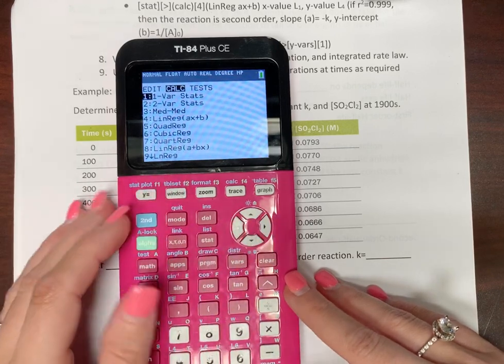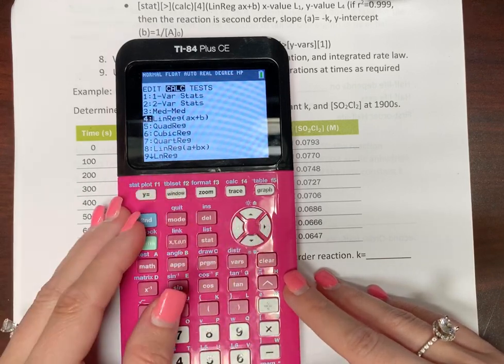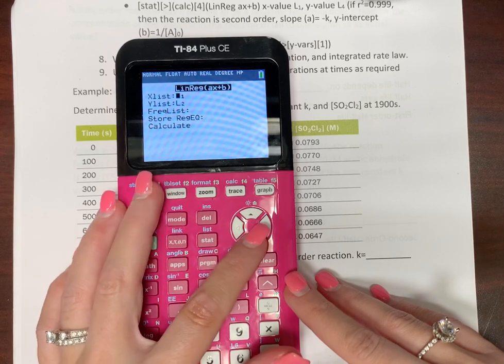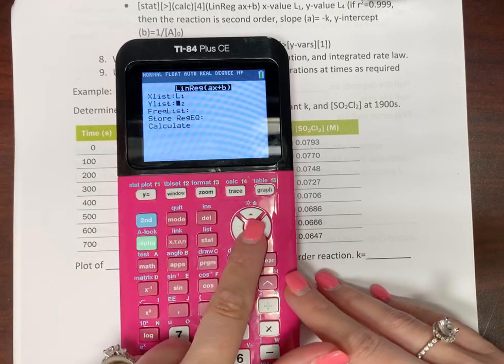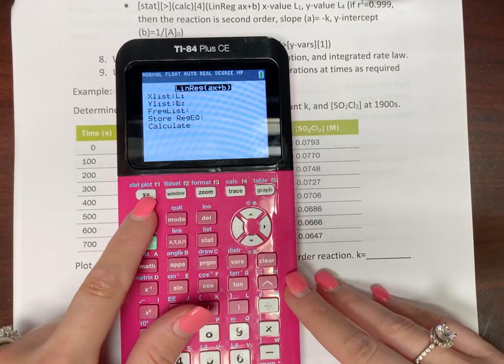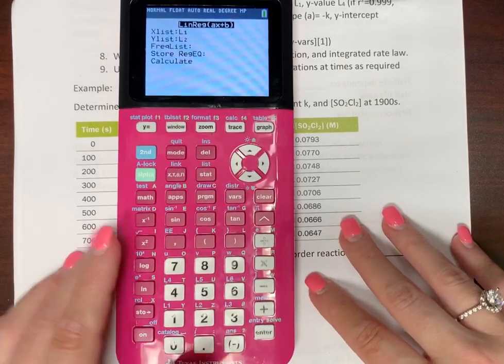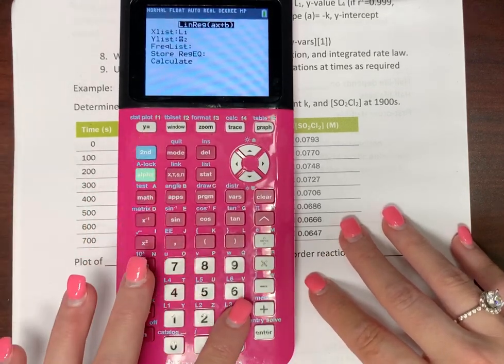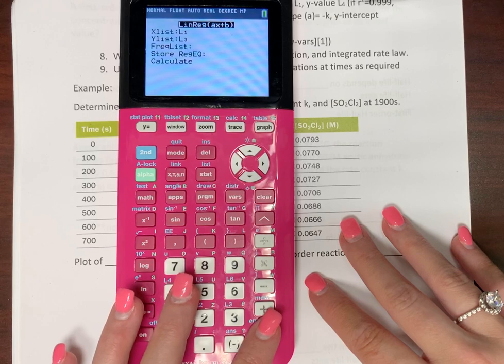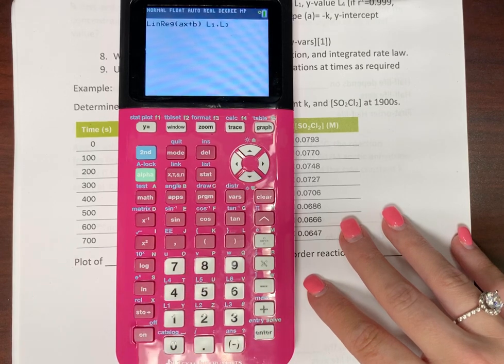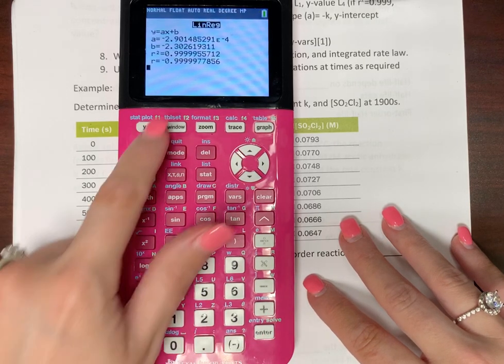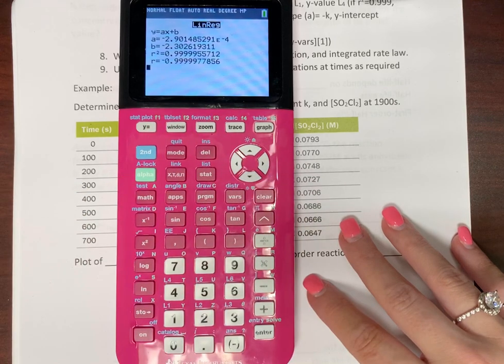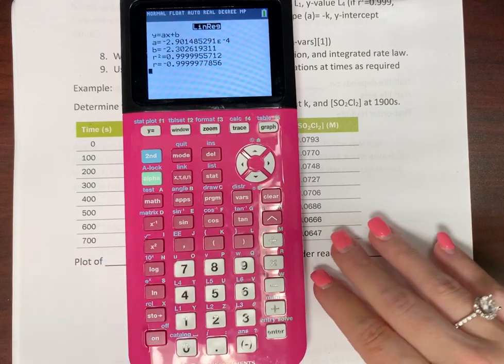So now go to stat, calculate, go down to linear regression. Time is still our x value. This time we want our y values to be list three, so that's going to be our natural log. Calculate, please. Ooh, look at all those nines. Look at all that. I bet that's it. I don't know for sure, but I bet that's it.